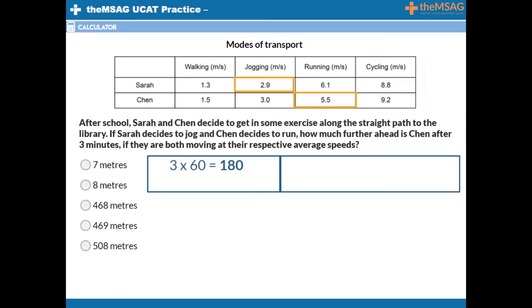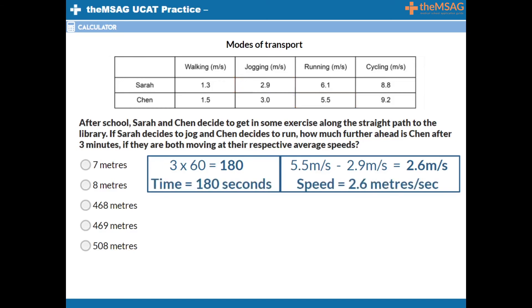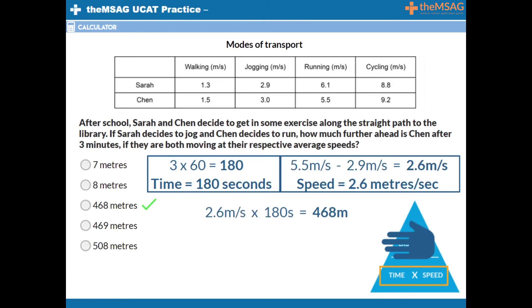We could work out their distances individually using the triangle, but there is a shortcut. The question asks for the difference between the two distances travelled, and since they are both travelling for the same amount of time, we can do just one speed, distance, time calculation using the difference between the two speeds. 5.5 minus 2.9 meters per second gives a relative speed of 2.6 meters per second. Multiplying the relative speed of 2.6 meters per second by 180 seconds equals 468 meters. Chen is 468 meters farther ahead. The answer is therefore C.